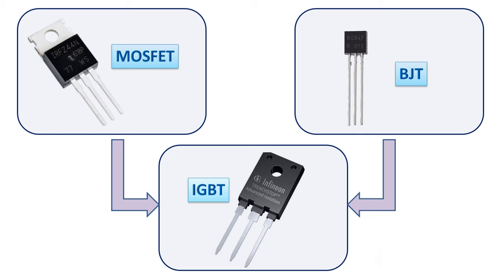"Bipolar" refers to the output part of the BJT having a bipolar nature where the current flow is due to both types of charge carriers. This allows it to handle very large currents and voltages using small voltage signals, making the IGBT a voltage-controlled device.